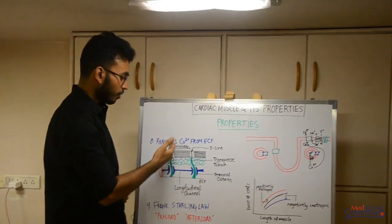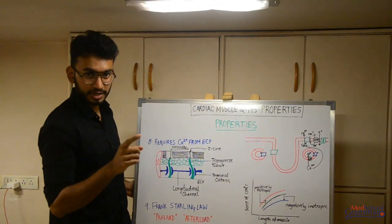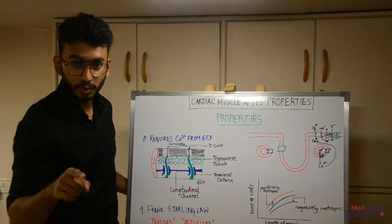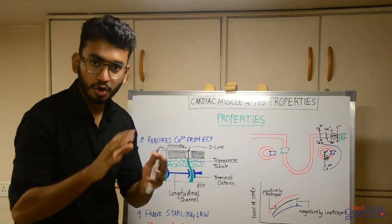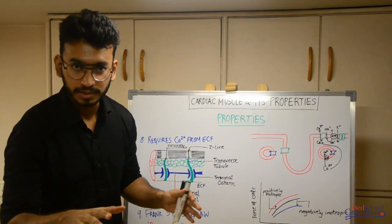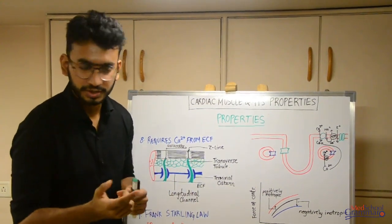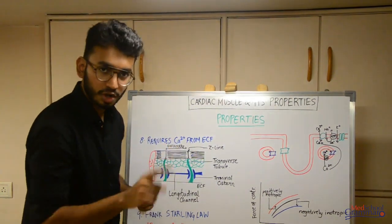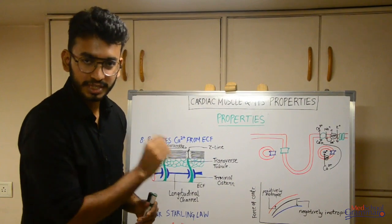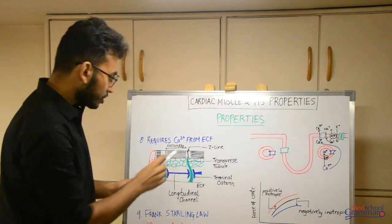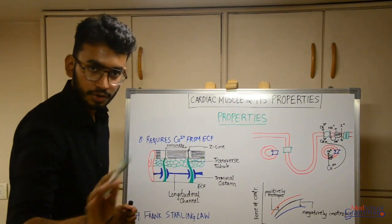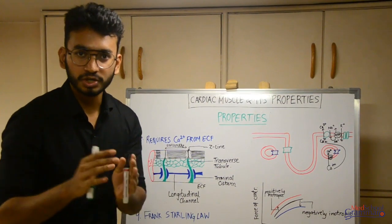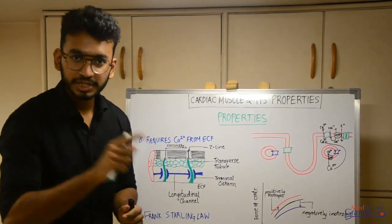Moving on to the next property: cardiac muscle requires calcium from the ECF, the extracellular fluid. Cardiac muscle requires calcium to contract, just like skeletal muscle. Skeletal muscle requires calcium for its contraction; similarly, cardiac muscle requires calcium for its contraction. But there is a slight difference between skeletal and cardiac muscle contractions. There is a key word you should know: excitation-contraction coupling.